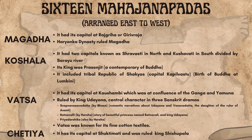Next comes the Kingdom of Vatsa with its capital at Kaushambi, located at the confluence of the Ganga and Yamuna. It was ruled by King Udyana, who is the central character in three Sanskrit dramas: Swapnavasavadatta by Bhasha, which is a romantic narrative about Udyana and Vasavadatta the daughter of the ruler of Avanti; Ratnavali by Harsha, the story of a beautiful princess named Ratnavali and King Udyana; and Priyadarshika, also by Harsha.